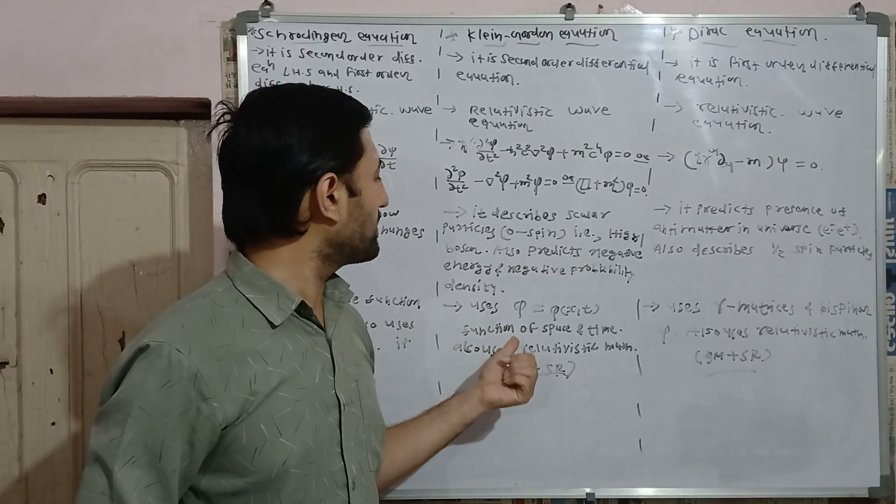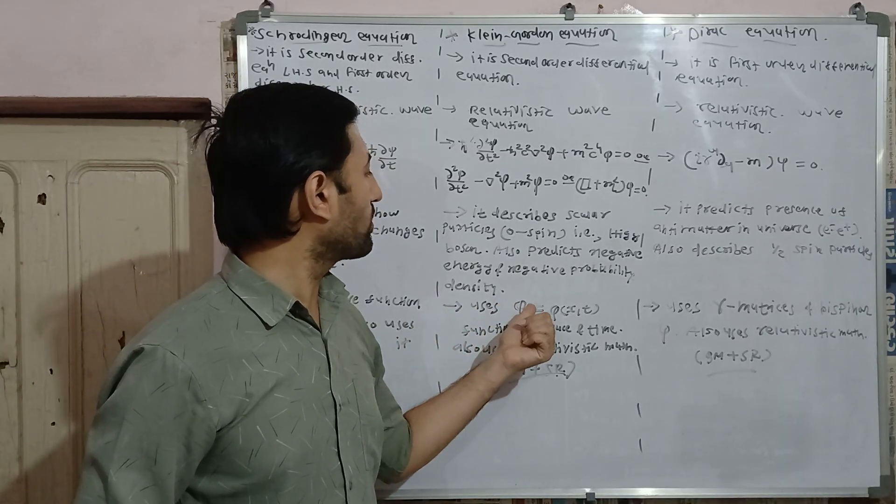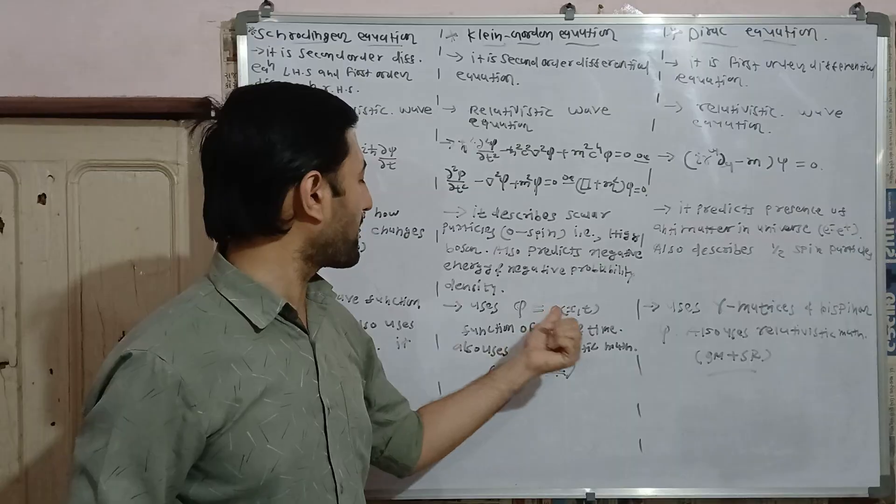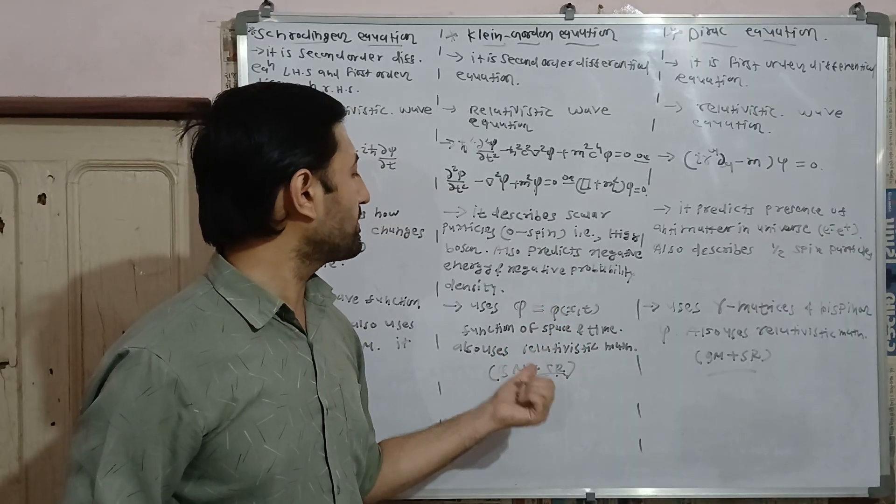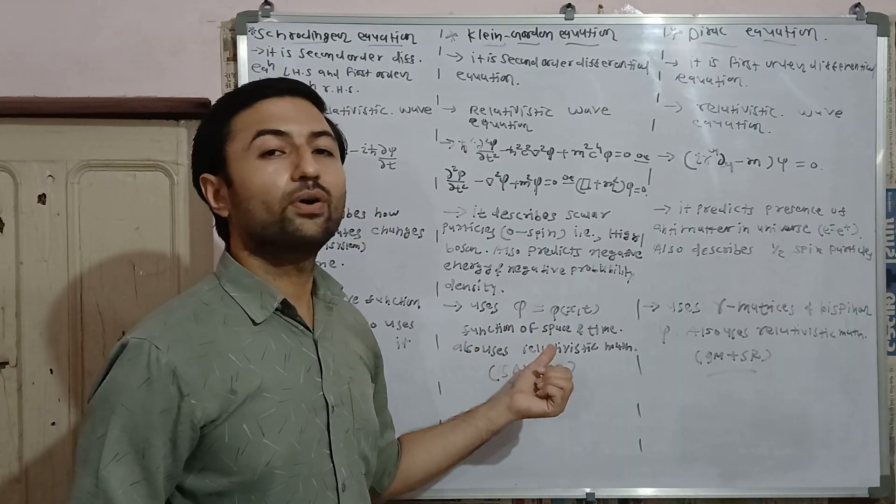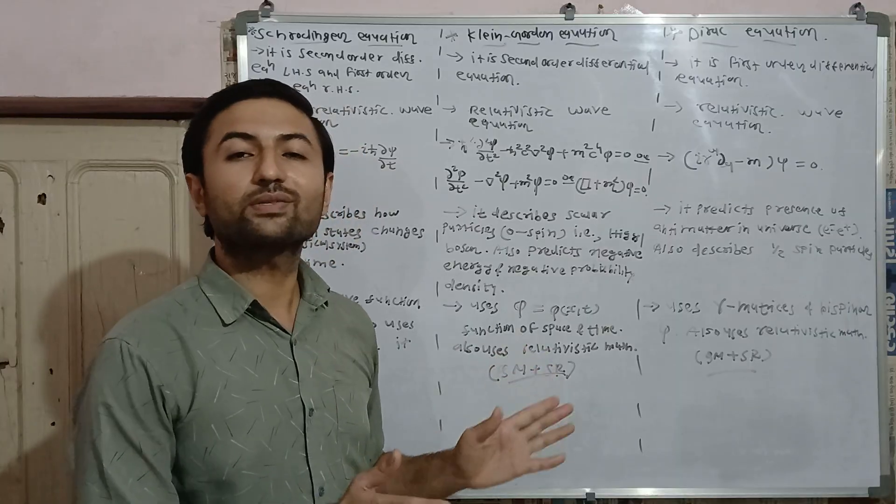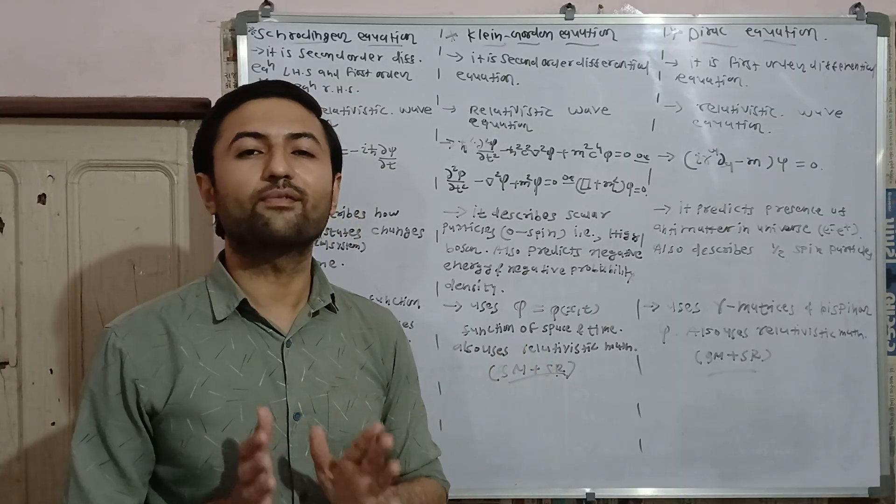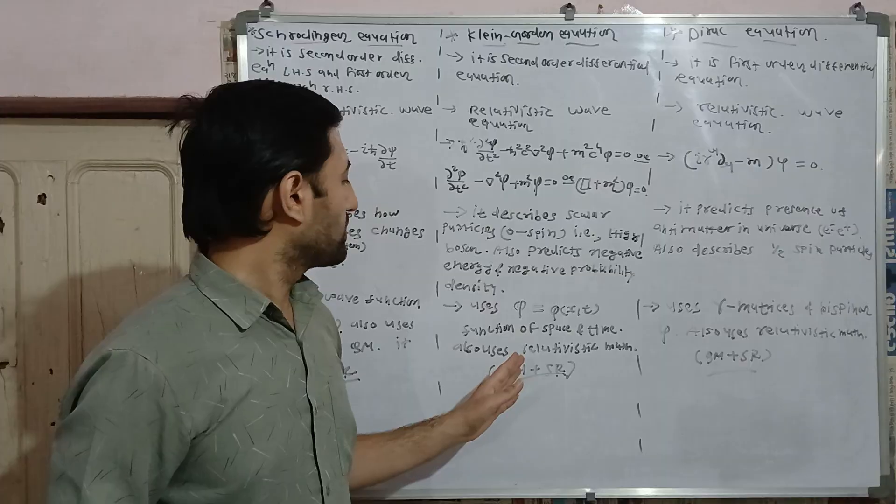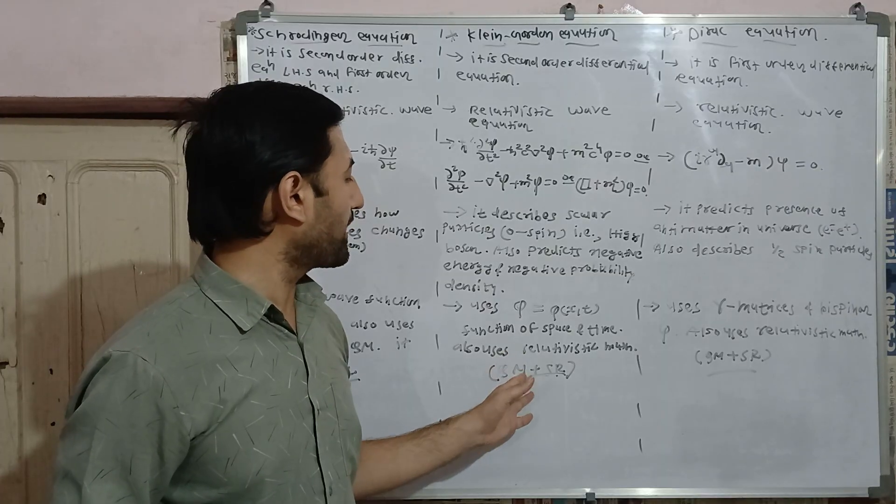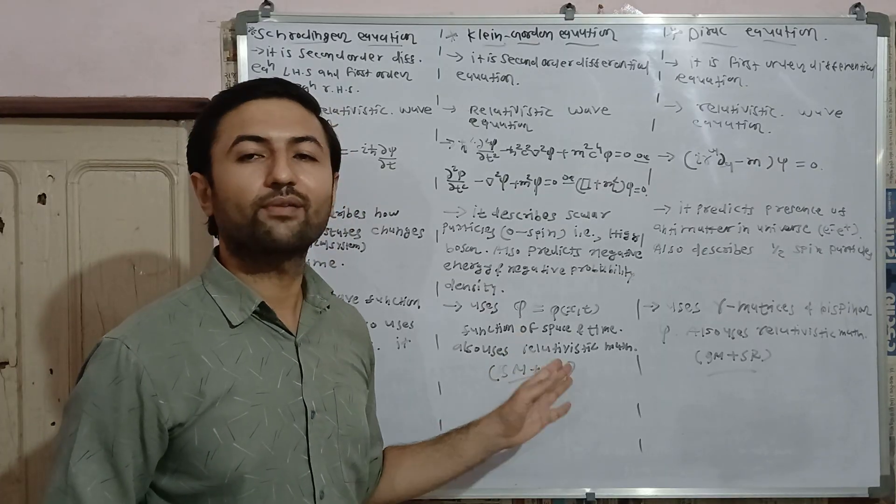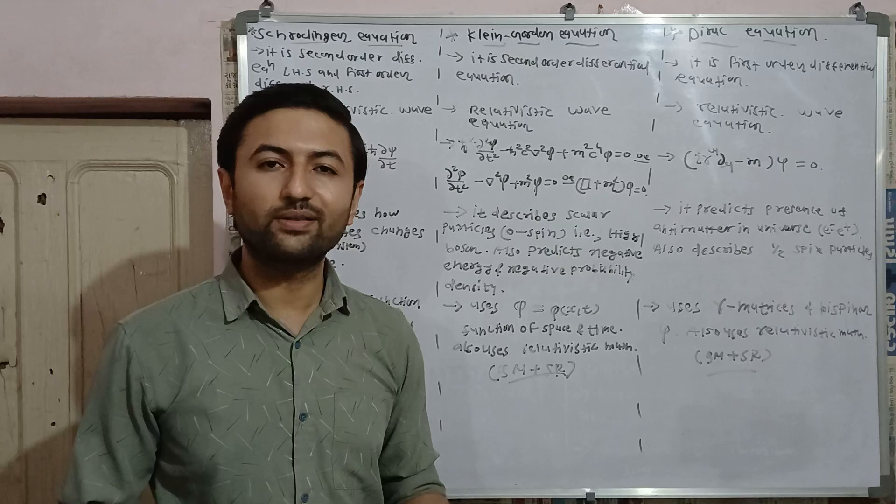Klein-Gordon equation uses phi equals phi of x t, function of space and time, also uses mathematics of relativity. And that is why it is equation that belongs to quantum field theory. So by unifying quantum mechanics with special theory of relativity, we can have quantum field theory.